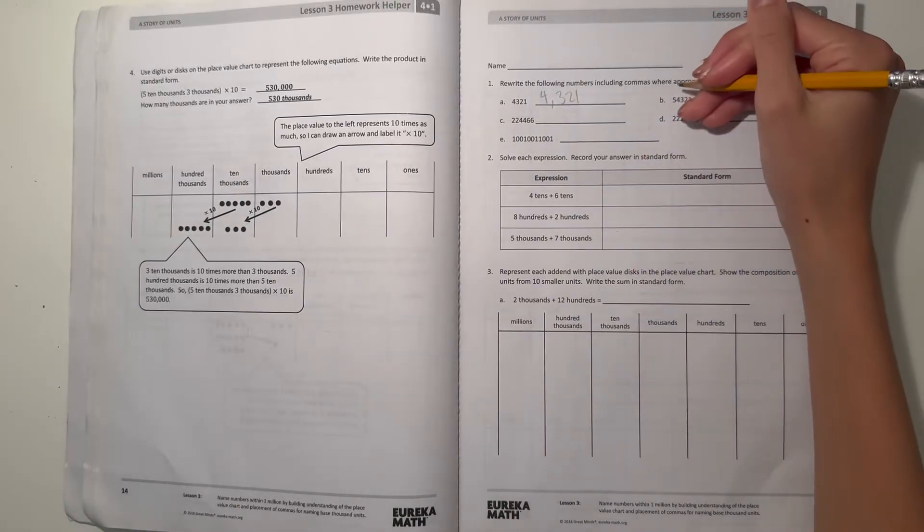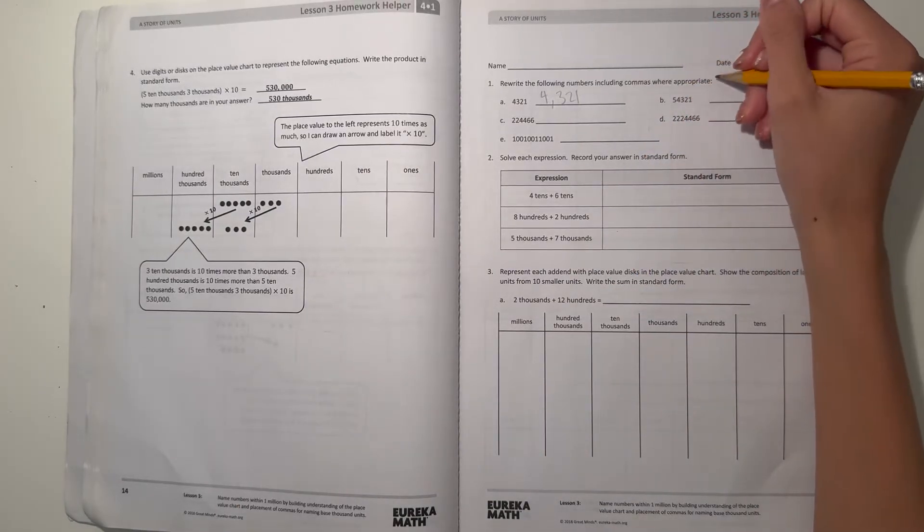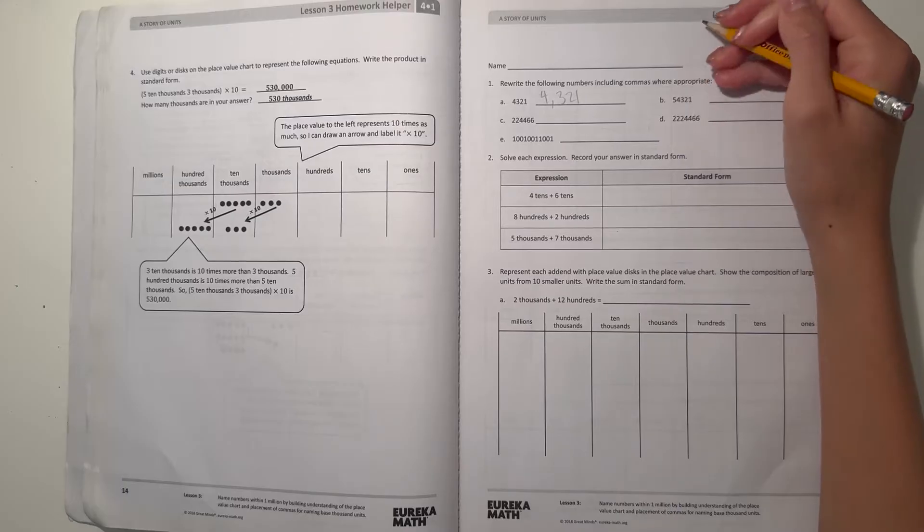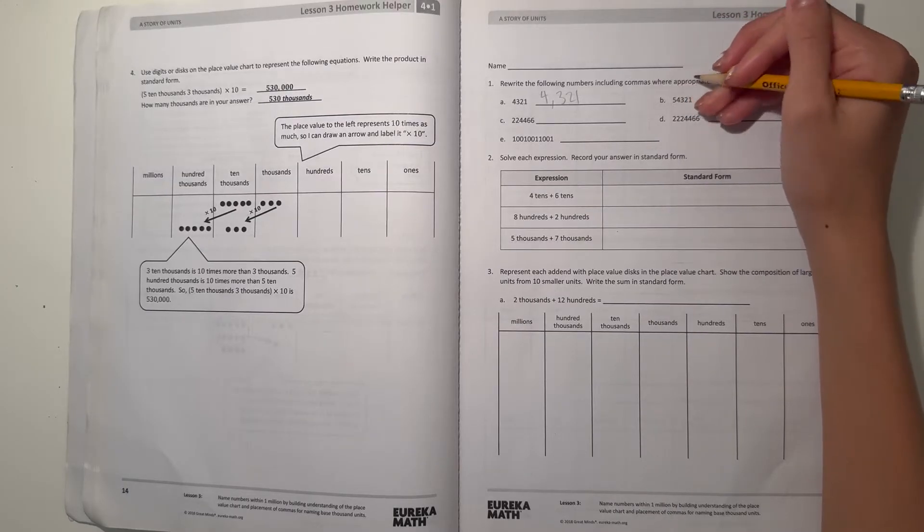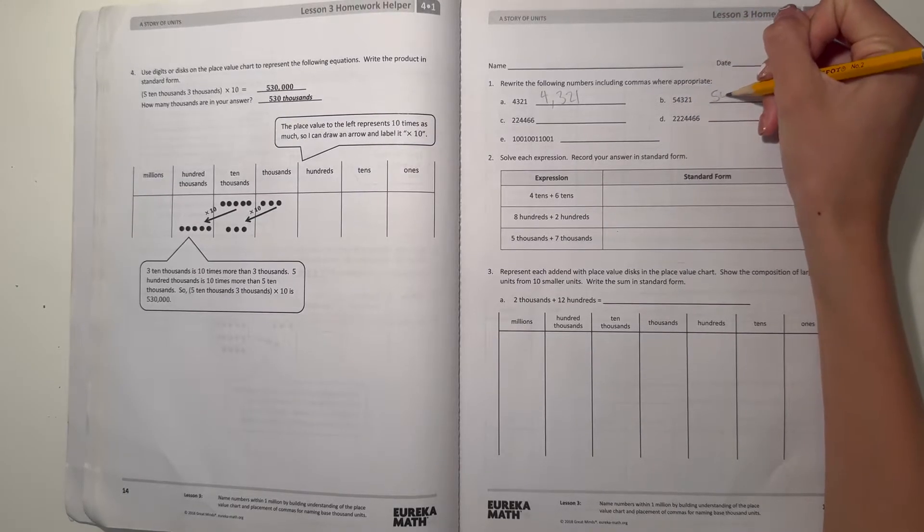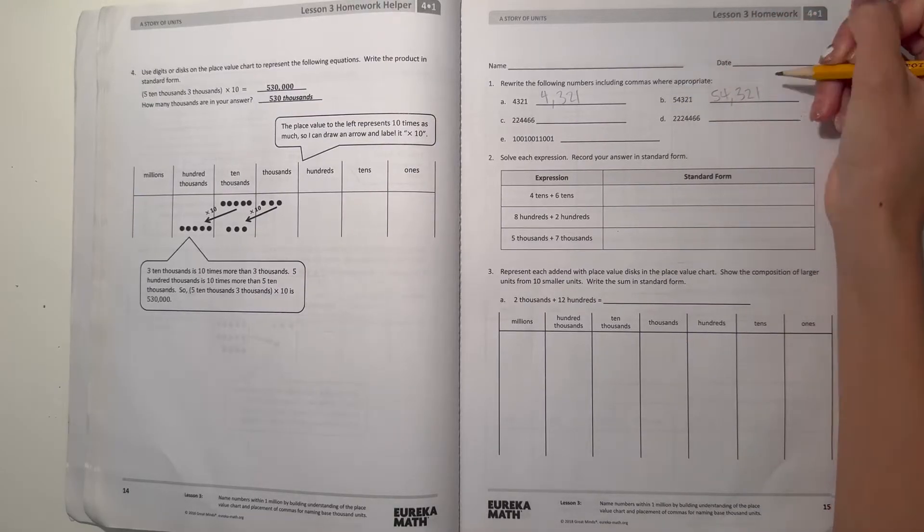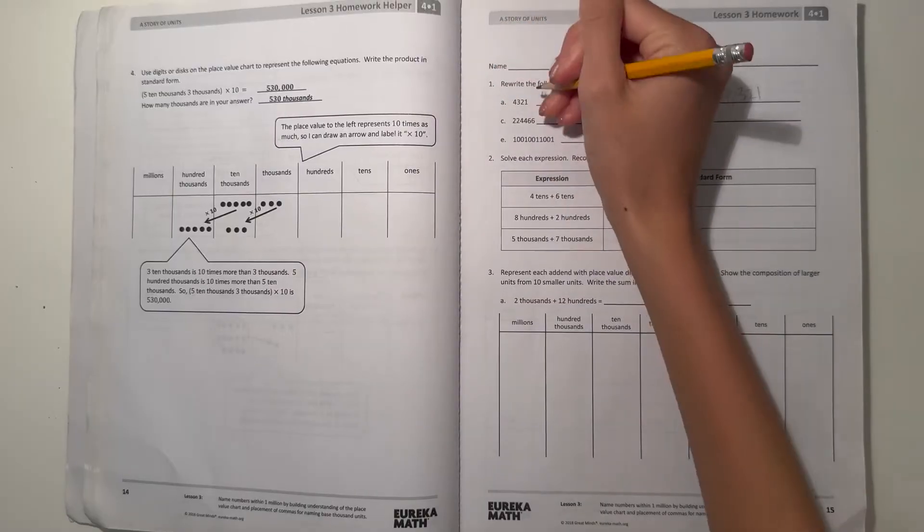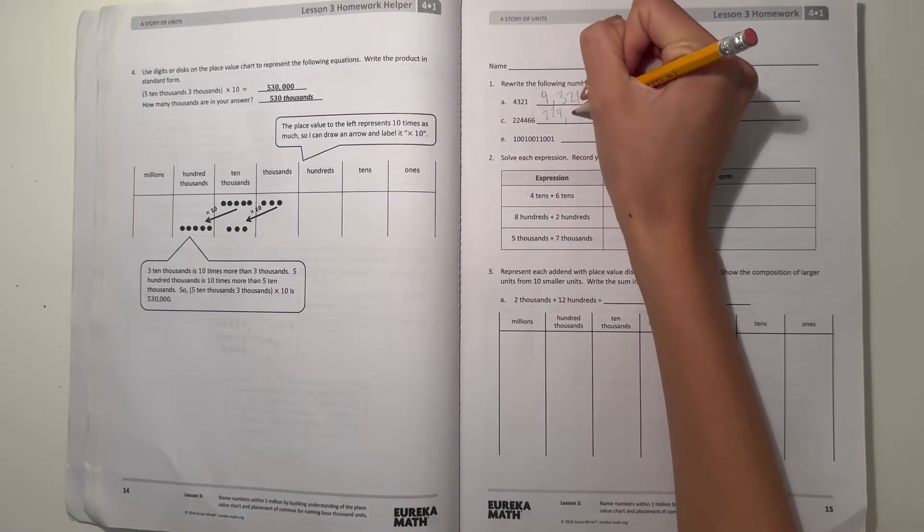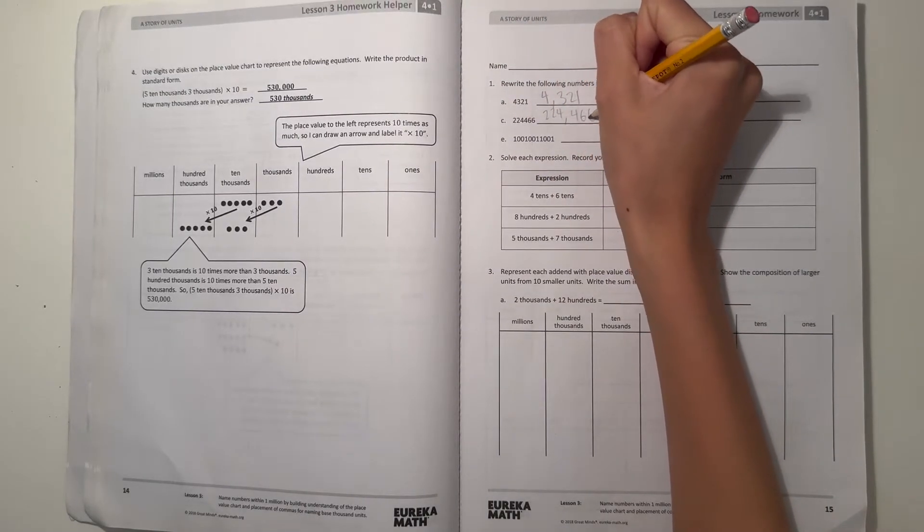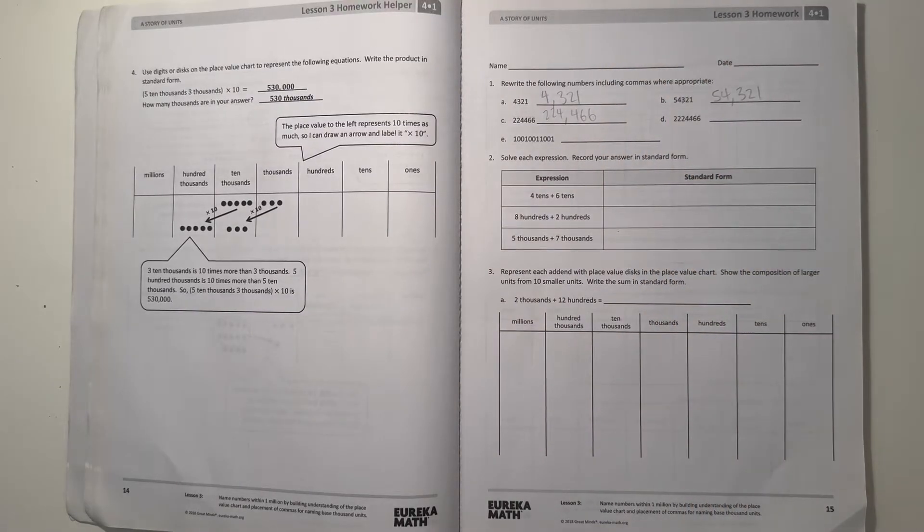And B, we have 54,321. So then the commas would go over here because it's 54,321. And then for C, the commas would go in between because this is 200,000, so it would go 3 and 3.